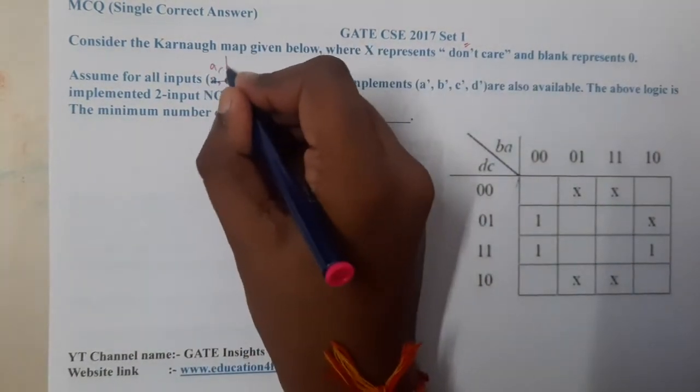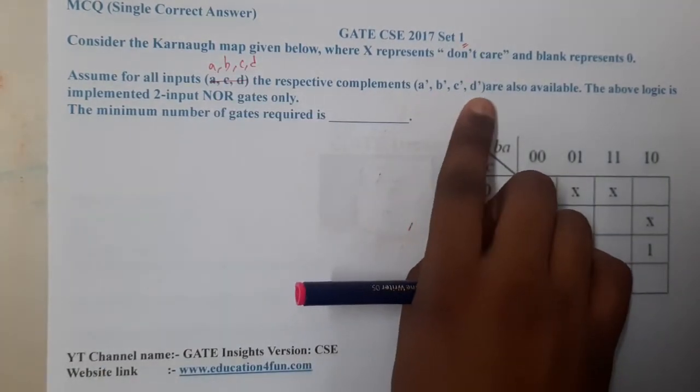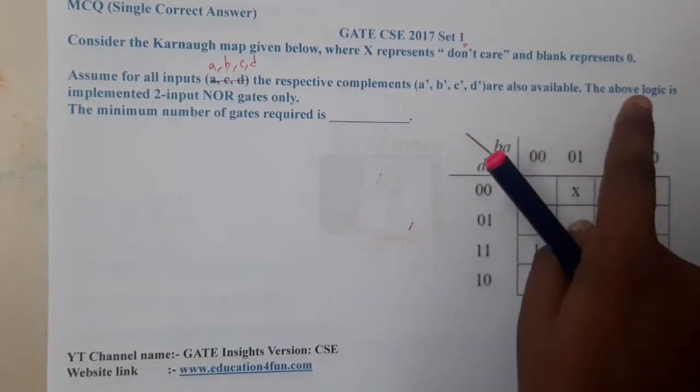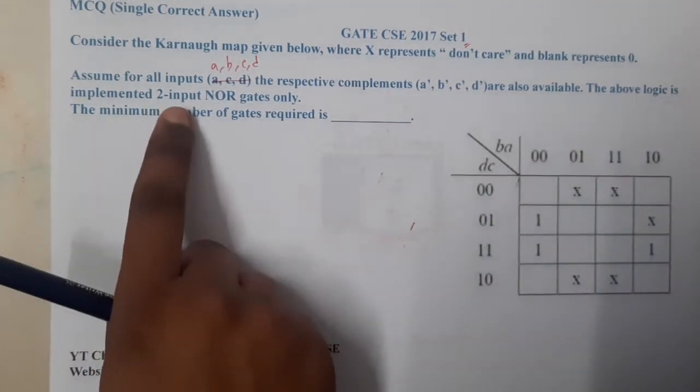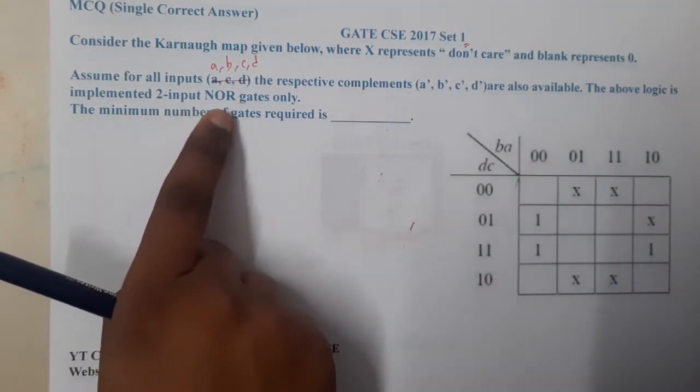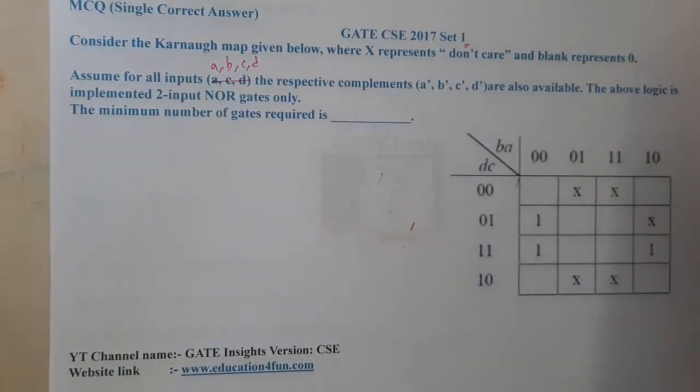For a, b, c, d, the complements a', b', c', d' are also available. The above logic is implemented using 2-input NOR gates only.